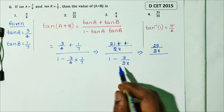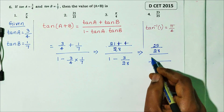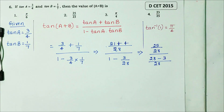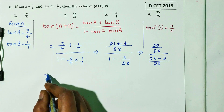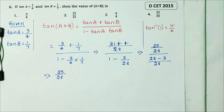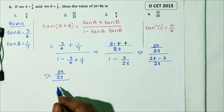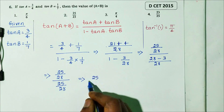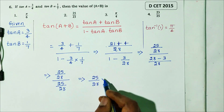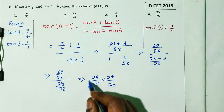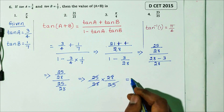The LCM is 28. So numerator: 28 minus 3 equals 25 divided by 28. After simplification, 25 divided by 25 cancels, giving answer 1. So tan(A + B) equals 1.